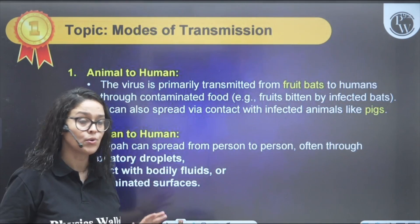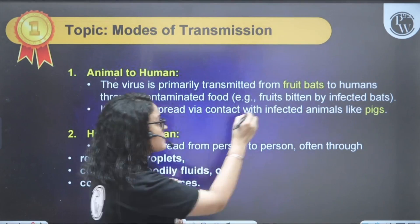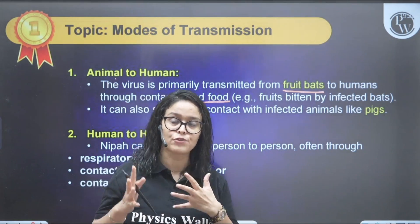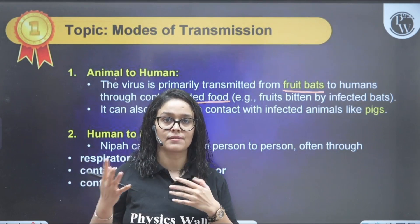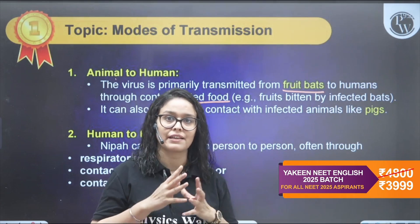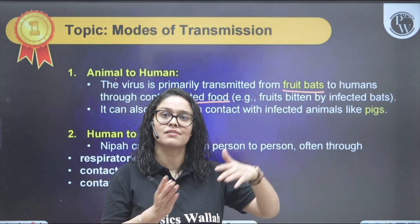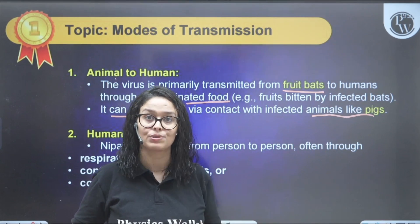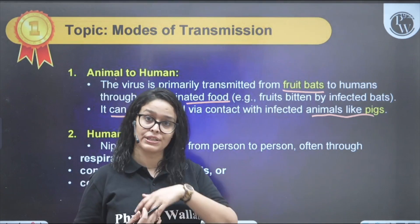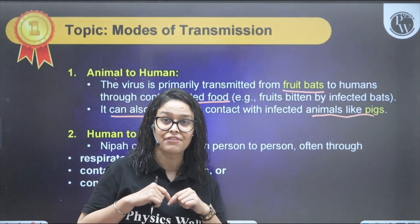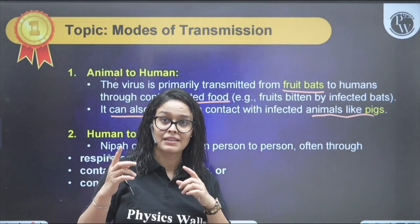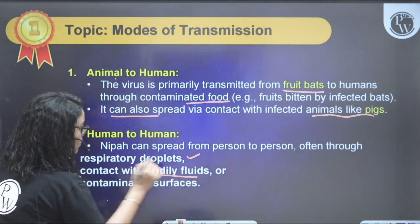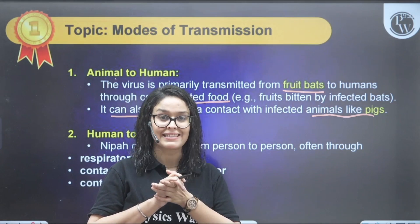The modes of transmission include: fruit bats to humans through contaminated food — fruits eaten by infected bats, or through their urine or body fluids. It can also spread via contact with infected animals like pigs. Human-to-human transmission occurs through respiratory droplets, similar to the common cold, as well as through contact with body fluids, contaminated surfaces, or objects.